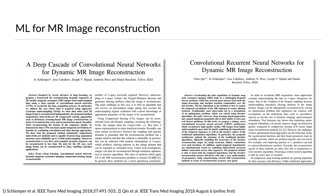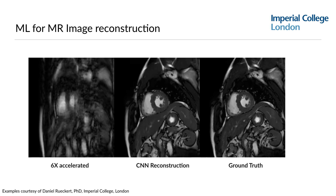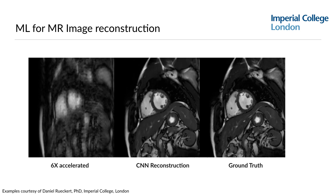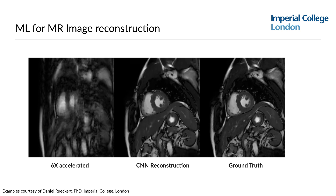An example of that is shown here. On the left we see a six-times accelerated sequence. This example is courtesy of Daniel Rueckert from Imperial College. In the middle, we see the convolutional neural net reconstruction. And on the right side, we see the ground-truth image, which is the non-under-sampled image that was acquired — so that took six times as long as the images on the left and in the middle.